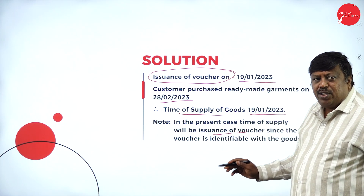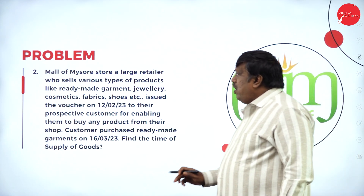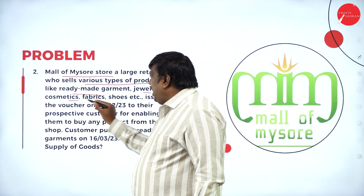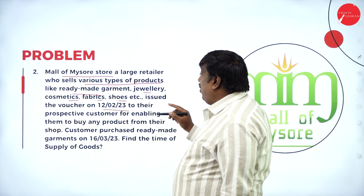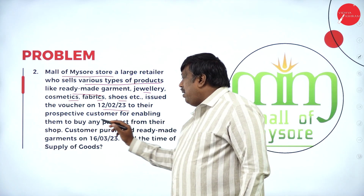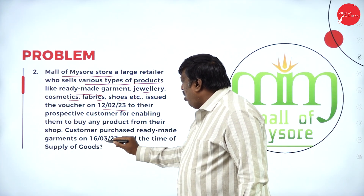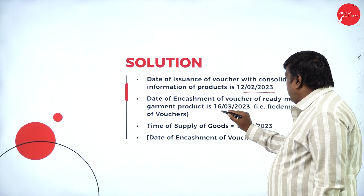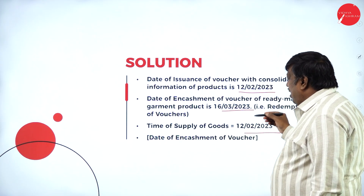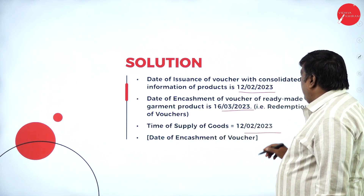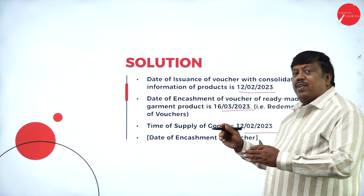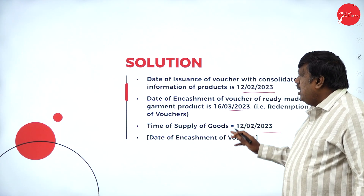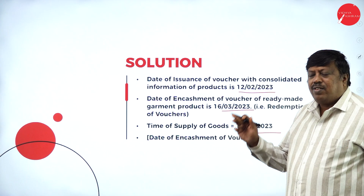Next problem: Mall of Mysore Store, a large retailer selling ready-made garments, jewelry, cosmetics, fabrics, shoes, etc., issued a voucher on 12th February 2023 to their prospective customers for enabling them to buy any product from their shop. Customer purchased on 16th March. Find the time of supply. Date of issuance is 12th February; purchase was 16th March. We consider 12th February — whichever is earlier, the date of issuance of the voucher is considered for time of supply. This is as per Section 12 sub-clause 4 of GST Act 2017.